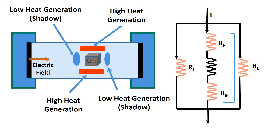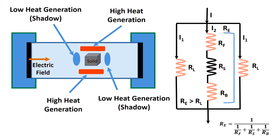In the circuit model, RL is the resistance of the liquid phase, Rf and Rb are the resistance of the liquid in front and back of the particles respectively, and Rs is the resistance of the solid particles. The equivalent resistance Re is in series, equal to 1 divided by (1/Rf + 1/Rs + 1/Rb), and Re will be greater than RL. The total current divides into two parts: I1 through the liquid phase and I2 through the particle and liquid in front and back. Since three resistors are in series for I2, I1 is greater than I2.